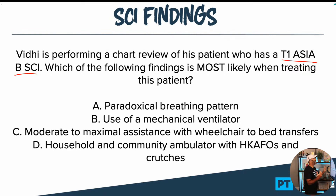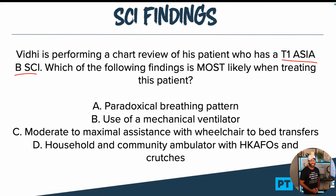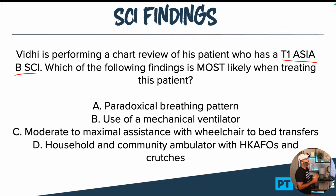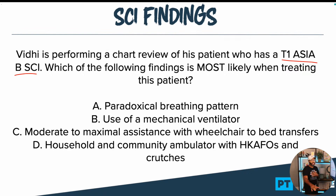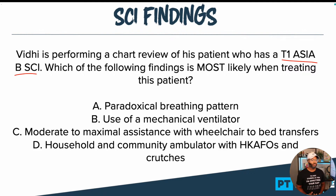Patient has a T1 ASIA B SCI. Which of the following findings is the most likely when treating this patient? At the end of the day, they're really just asking us: if you got this patient that comes in with this type of spinal cord injury, what do you expect to find? Go ahead and lock in your answer right now. We're going to roll through these answer choices, ruling in and out.